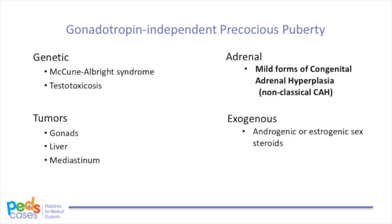Moving on to gonadotropin-independent or peripheral precocious puberty: here, the hypothalamus and pituitary are not activated, and sex steroids may arise from autonomous gonadal secretion or from elsewhere, meaning secondary sexual characteristics may not be compatible with the child's sex. Certain genetic disorders can lead to this condition — for example, in McCune-Albright syndrome, the gonads themselves can be activated autonomously to produce estrogen or testosterone. In testotoxicosis, also known as familial male-limited precocious puberty, there is a mutation in the LH receptor leading to increased sex steroid production. There could also be tumors in the gonads, liver, or mediastinum rapidly producing sex steroids.